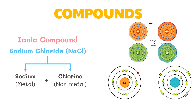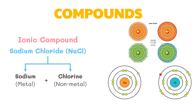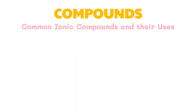Sodium becomes a cation with positively charged atoms as it loses an electron and transfers it to the chlorine atom. Chlorine, gaining the electron, becomes an anion with negatively charged atoms, and eventually an ionic bond is formed holding these ions together. Here are some examples of common ionic compounds and their uses.